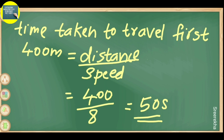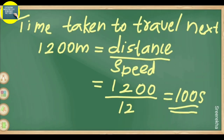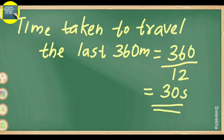Time for first segment: 400 divided by 8 equals 50 seconds. Time for second segment equals 100 seconds. Time for third segment equals 30 seconds.